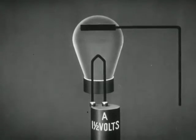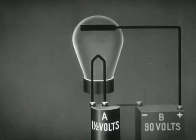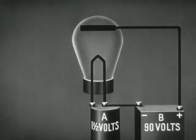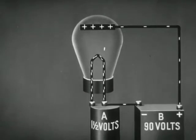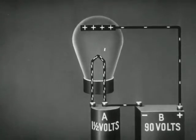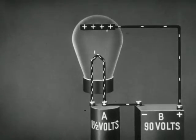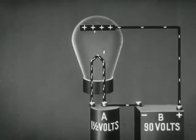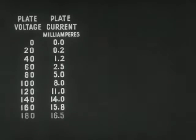Now let us add a second element called the plate. Actually, the plate is a metallic cylinder surrounding the filament. The plate is connected to the positive side of a high voltage battery. Since the plate has a positive charge with respect to the filament, electrons are attracted to the plate. A stream of electrons thus flows from the filament to the plate inside the tube, to the battery, and back to the filament — this is the plate circuit. If the voltage on the plate is increased, the plate current will increase, since more electrons will be attracted because of the higher positive charge.